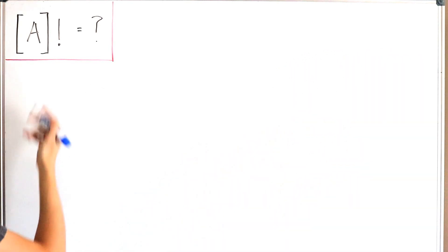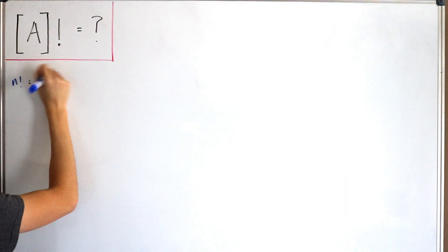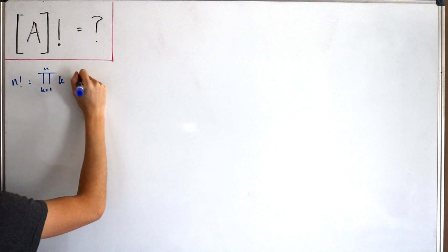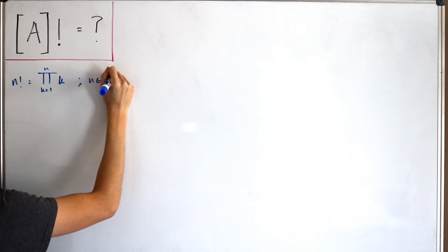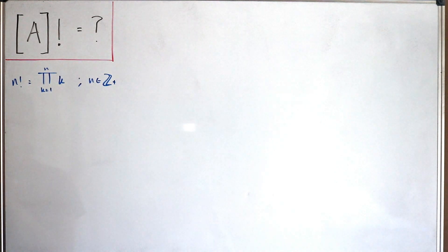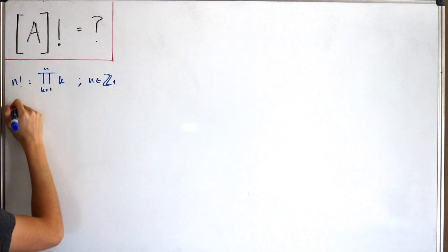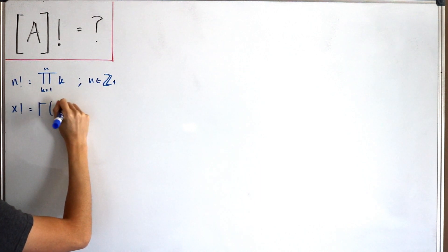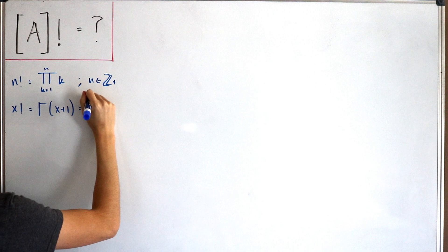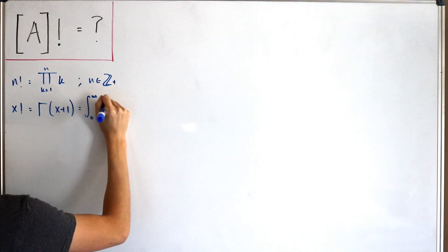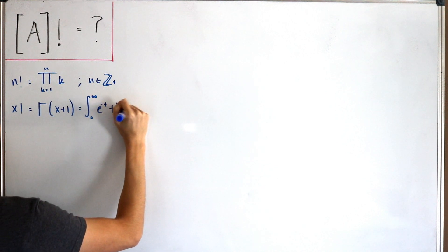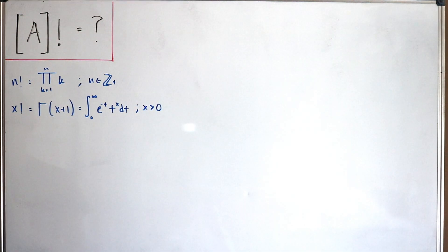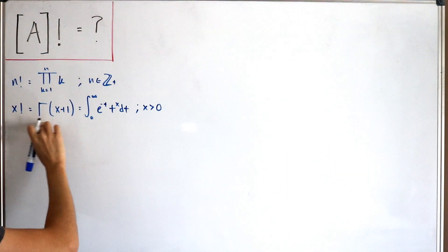Starting with definitions: n factorial is the product from k equals 1 to n of k, where n is a positive integer. With the relationship between factorials and the gamma function, we have x factorial equals gamma of x plus 1, which is the integral from 0 to infinity of e to the negative t times t to the power x, dt, where x is greater than 0.